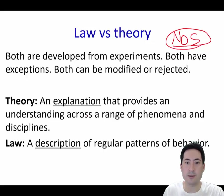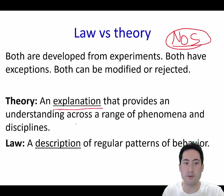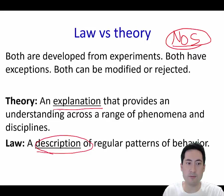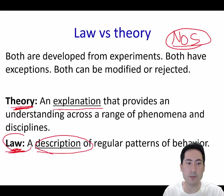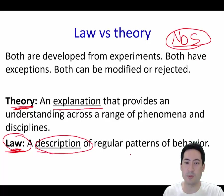A theory is regarded as an explanation — it provides understanding across a range of phenomena — and a law is a description. These words have changed throughout history, but we need to take these common views. So a law is pretty much what happens, and a theory tries to explain what happens.